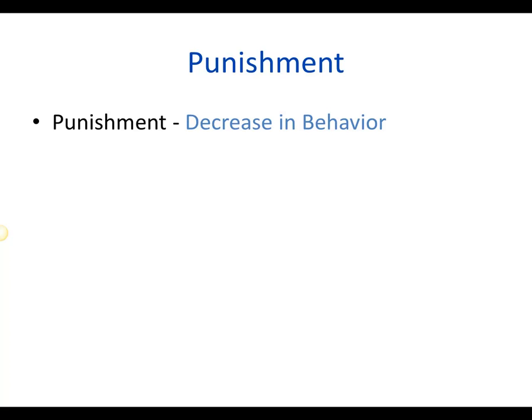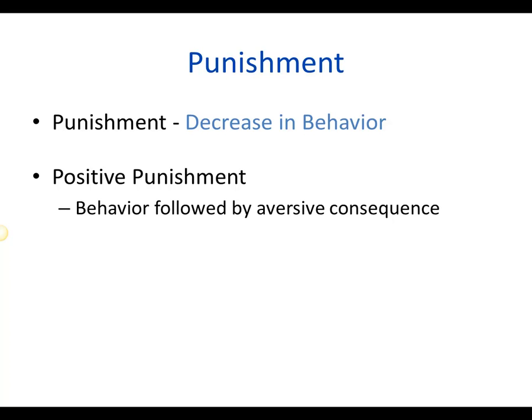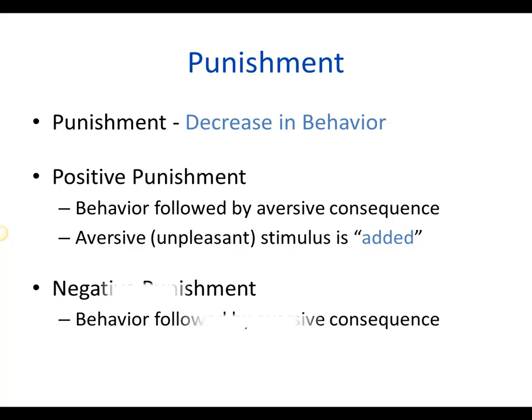The other part of operant conditioning is punishment — something that decreases a behavior. Just like with rewarding stimuli, what counts as an unpleasant stimulus is person-dependent. Positive punishment means a behavior is followed by an adverse consequence — something unpleasant is added to the environment. The easiest examples are getting a spanking or a speeding ticket: you participate in the behavior and something not nice is added.